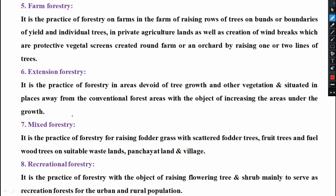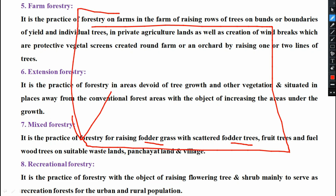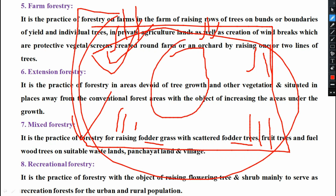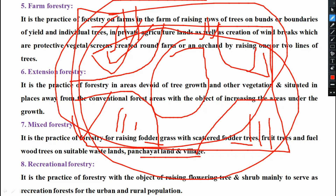Next is mixed forestry. It is the practice of forestry for raising fodder grass with scattered fodder trees, fruit trees, and fuel wood trees on suitable wasteland, panchayat land, and villages. In this type, fodder grass is grown, fodder trees are grown, fruit trees are grown, forest plants are grown, and fuel wood trees are grown. It is known as mixed forestry where there is also a human community, but in wasteland or panchayat land where human availability is less, within a rural or urban area.